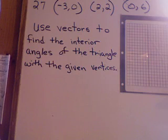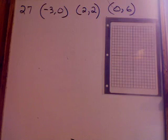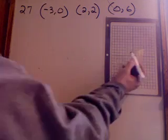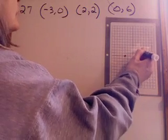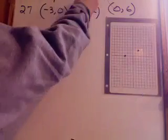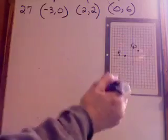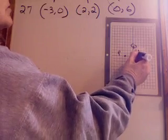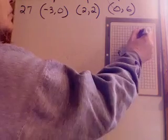The question for this lesson is: use vectors to find the interior angles of the triangle with the given vertices. We're given ordered pairs, so it's nice to plot them and see what you're looking at. We have P at (-3, 0), Q at (2, 2), and R at (0, 6). So there we have our triangle PQR.